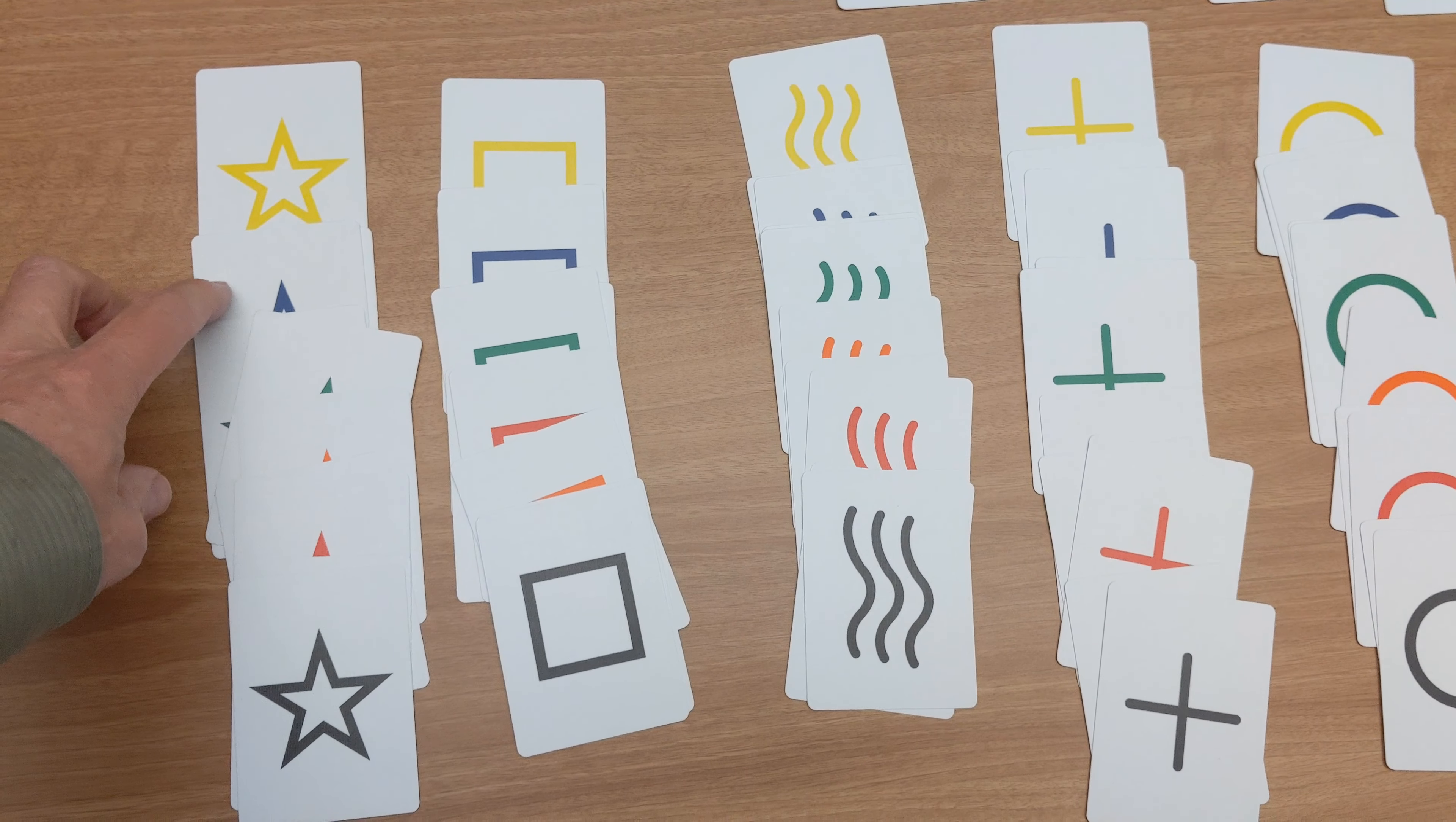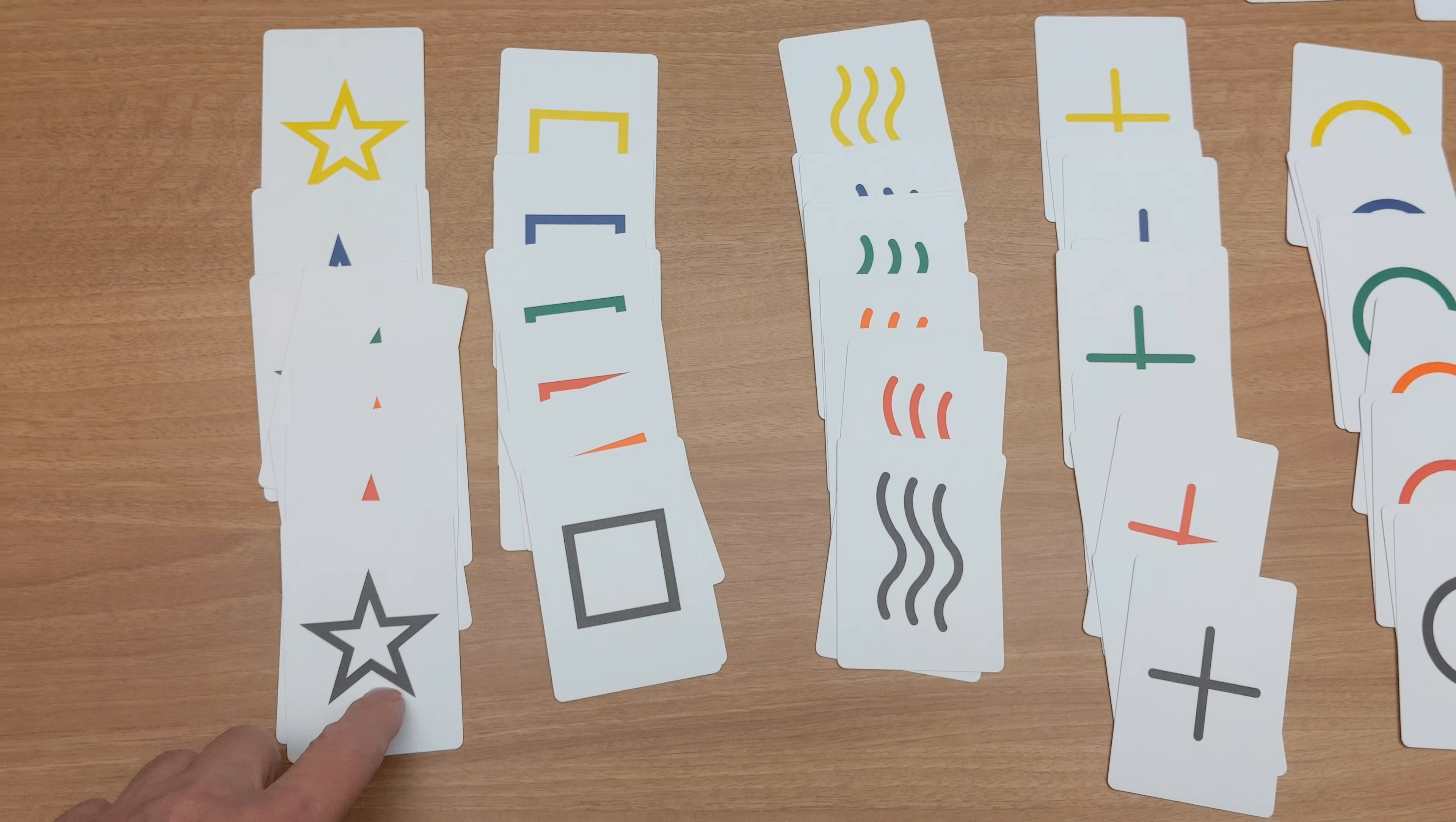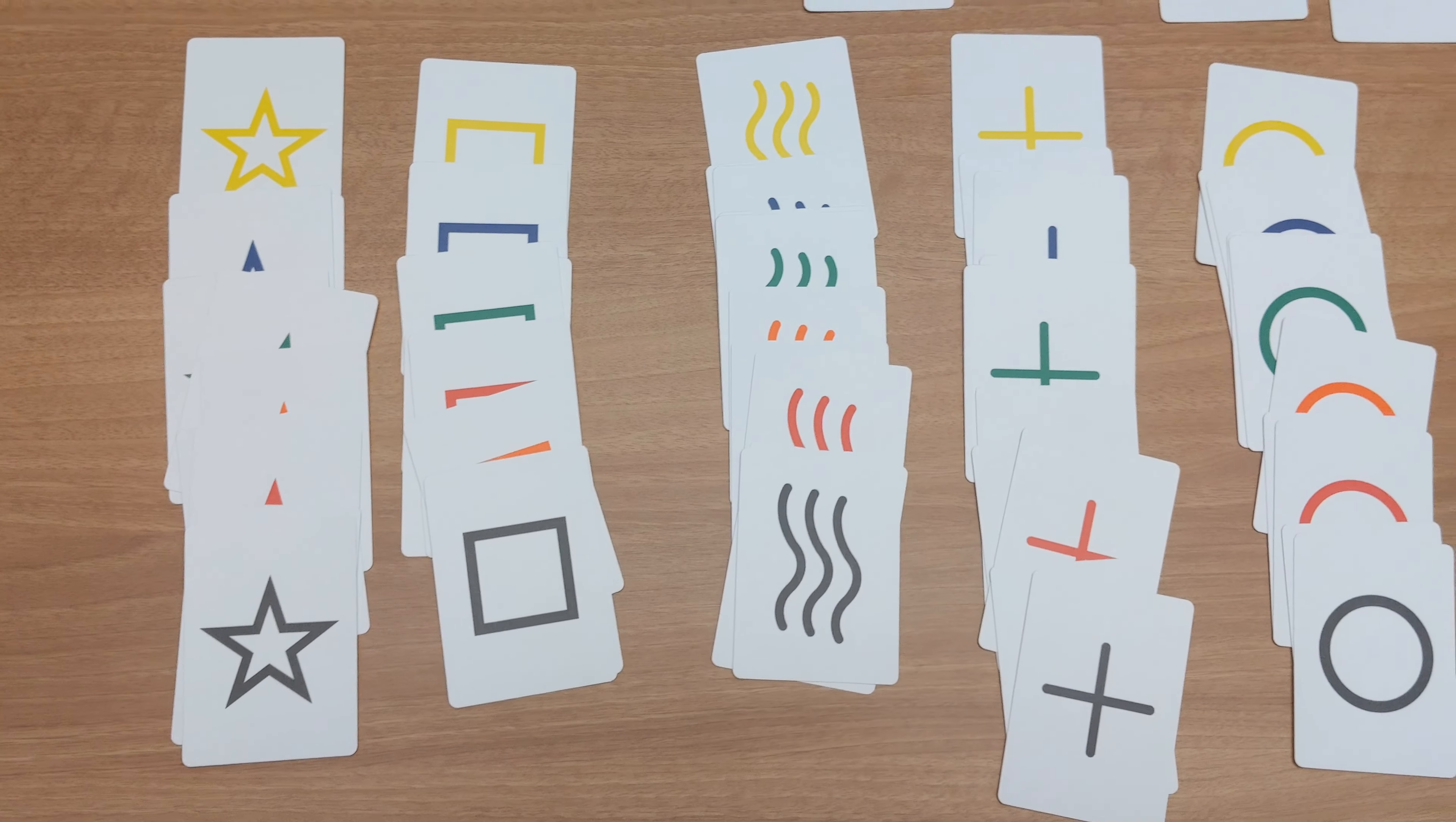There's one yellow, two blue, two green, one orange, two red, and then two black for each of the different symbols.